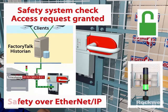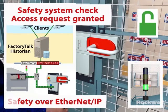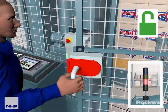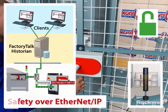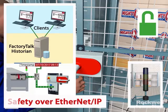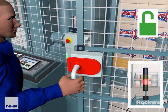When a safe condition exists, access is granted. This unlocks the interlocked guard door, allowing the operator to enter. The operator can now safely correct the issue.